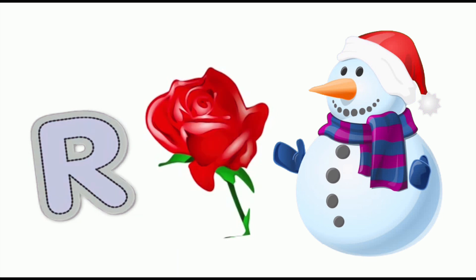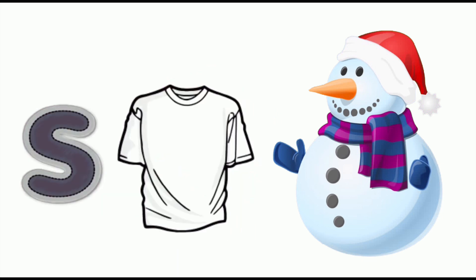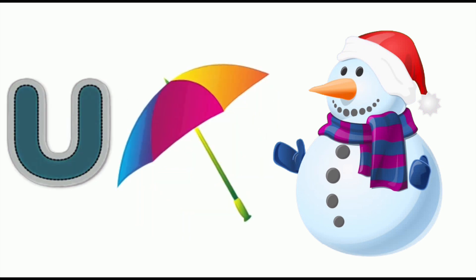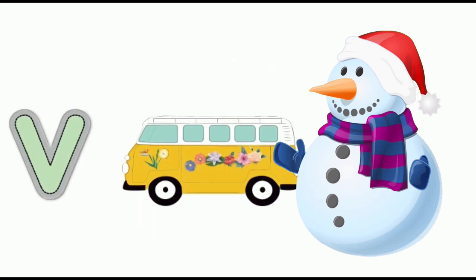R for rose, rose, rose. S for shirt, shirt. T for toy, toy, toy. U for umbrella, umbrella, umbrella. V for van, van.